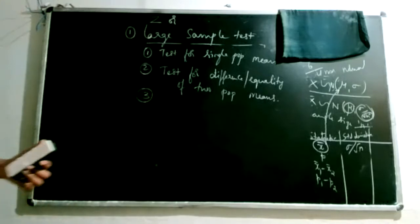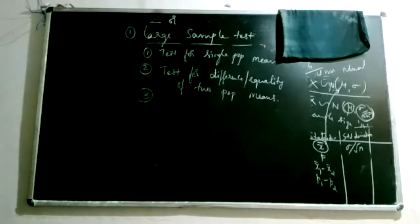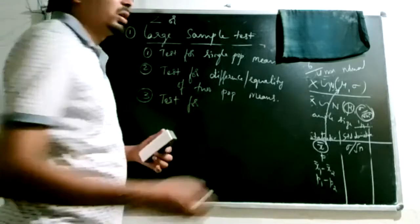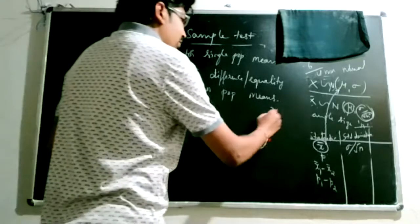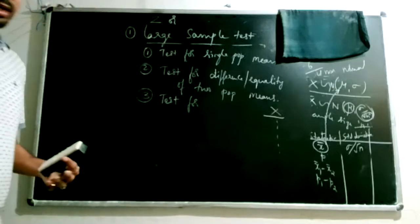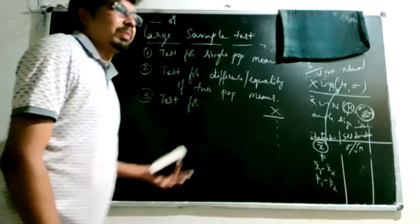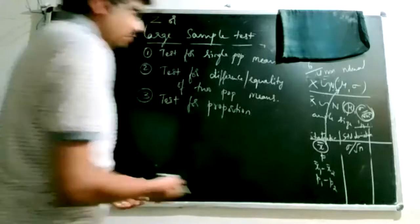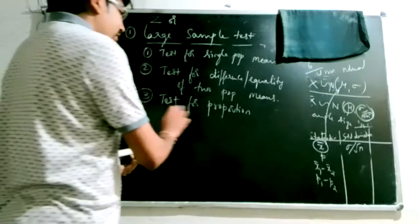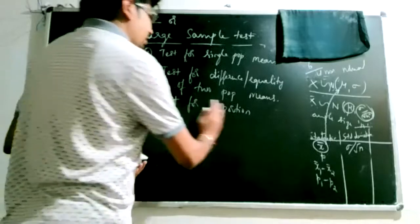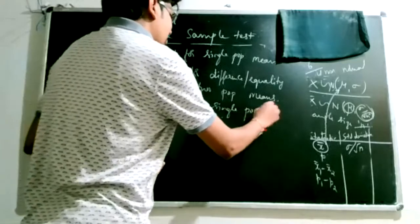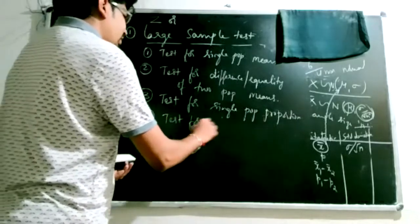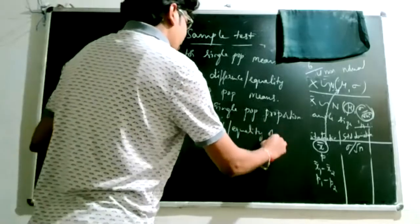The third test applies when the variable is of count or qualitative data nature — you cannot compute means or variances, but rather proportions or percentages of people, defective items, or patients. In that case, you use the test for a single population proportion. The fourth test extends this to testing the difference or equality of two population proportions.